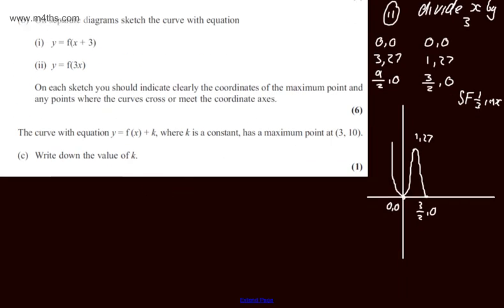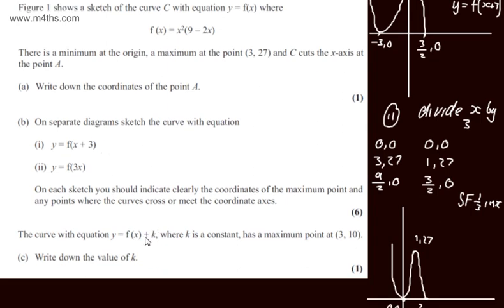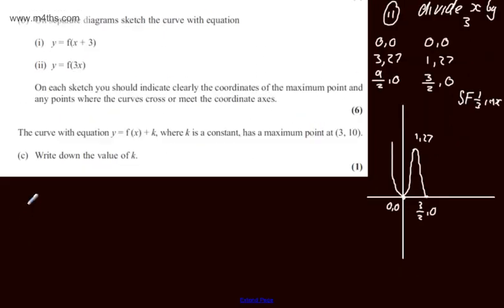We're now told the curve with equation y equals f of x plus k, where k is a constant, has a maximum point at 3 comma 10. In part C, we're asked to write down the value of k. If we just look at the f of x, this is simply now a vertical translation. And we can state that that vertical translation will be 0 minus k. So we're moving downwards by k units.